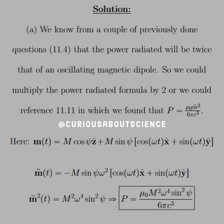We just get M squared omega to the fourth sine squared phi due to the fact that we get a cosine squared plus a sine squared, and that goes to 1. So our power here, based on the results of 11.11, is mu naught M squared omega to the fourth sine squared phi over 6 pi C cubed. All right, not too bad.